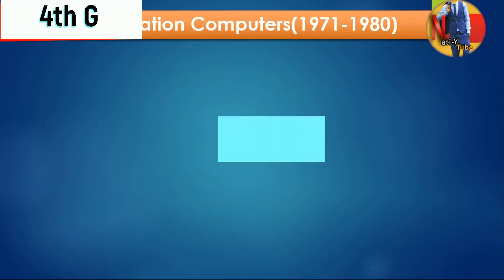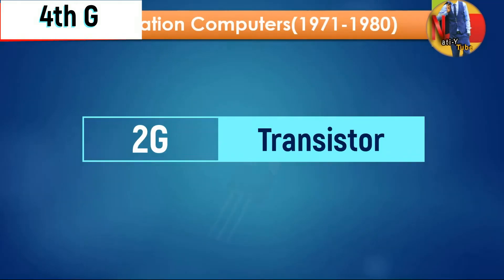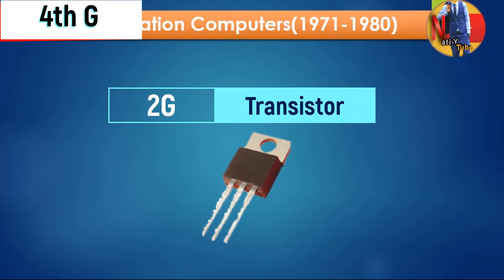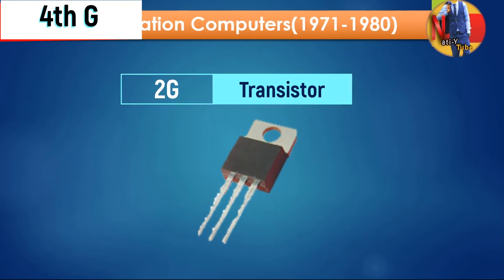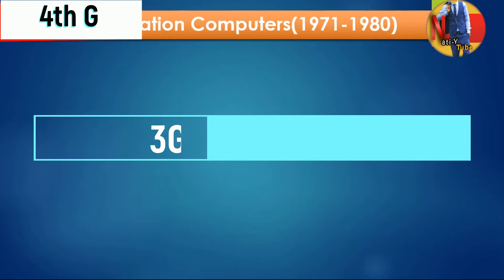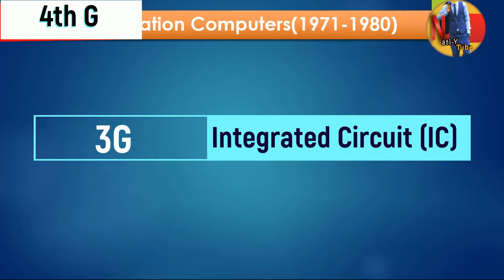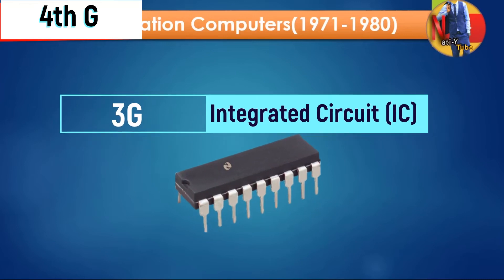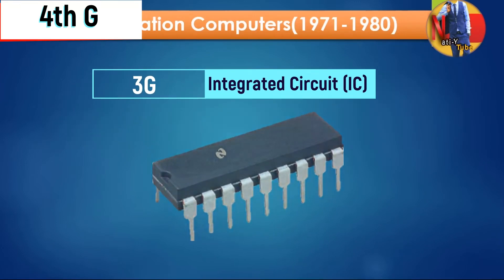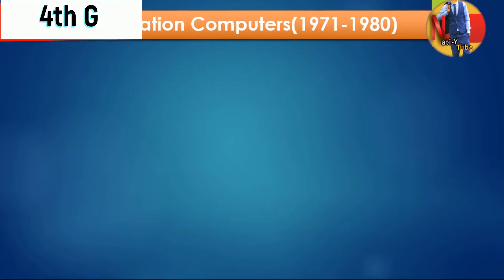The second generation of computers used transistors, and the third generation used integrated circuits. You can see the first generation of computers in these early computers.